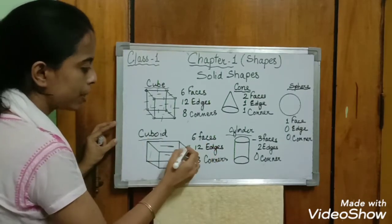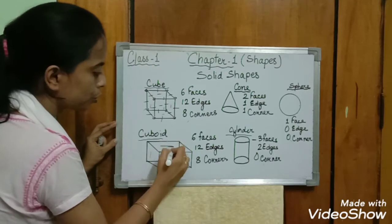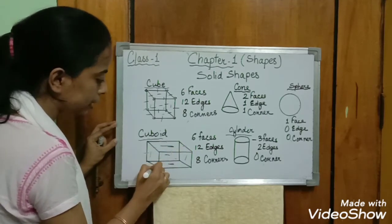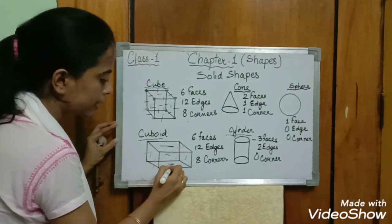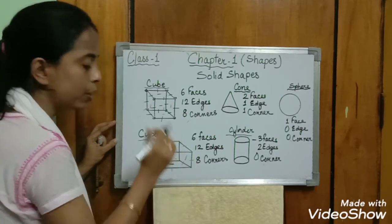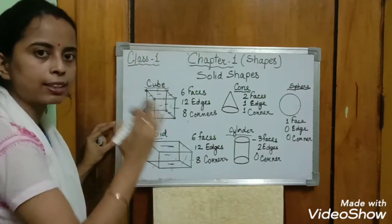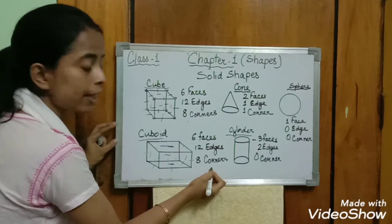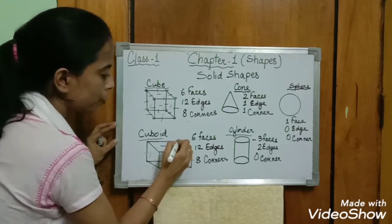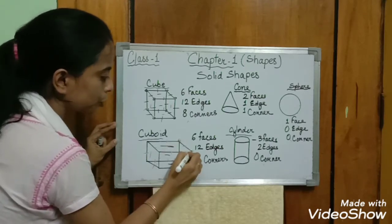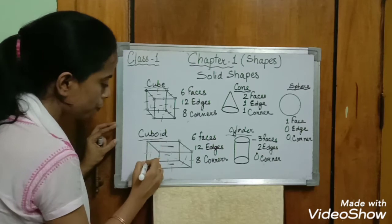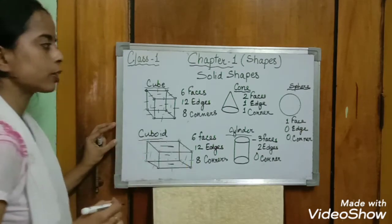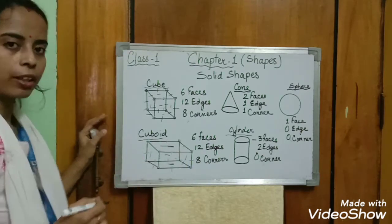How many edges does a cuboid have? Twelve. Counting: one, two, three, four, five, six, seven, eight, nine, ten, eleven, twelve. Twelve edges in a cuboid. And how many corners? Eight corners — one, two, three, four, five, six, seven, eight. Eight corners.